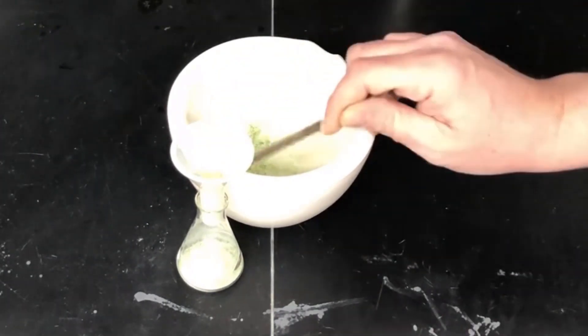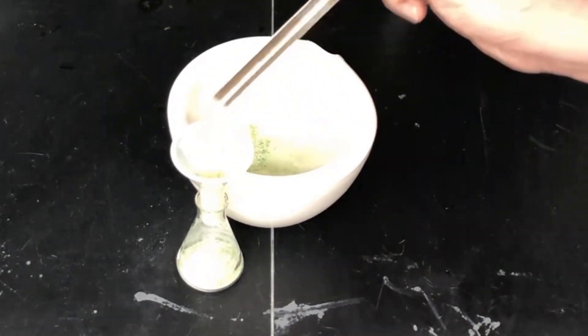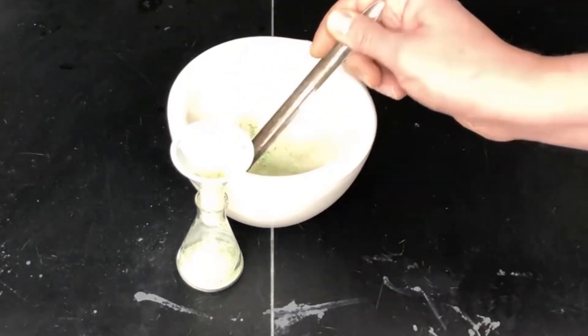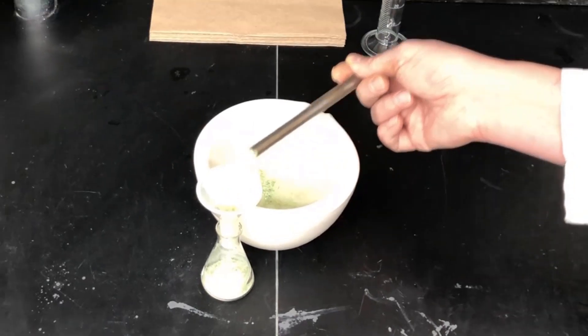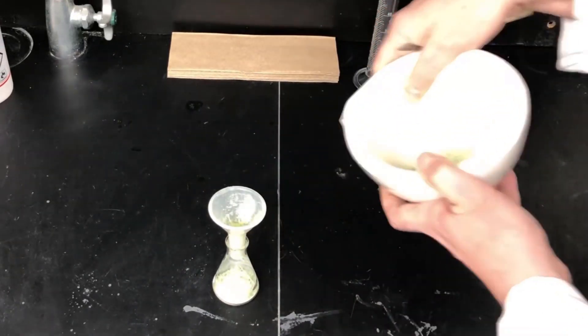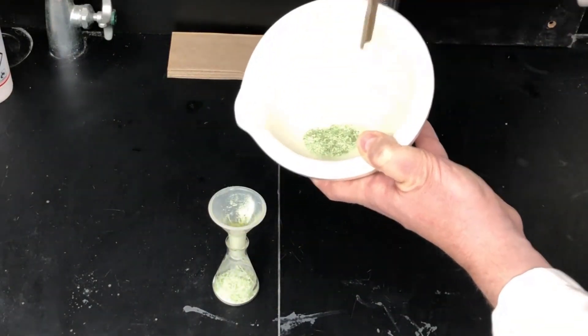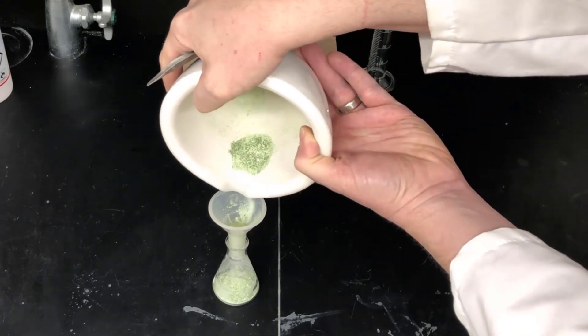Sometimes the fibrous material can plug the filter, so just be aware of that. That can be kind of a hassle, but get your solid material into the Erlenmeyer flask, and now I'm going to pour the last bits of it in.